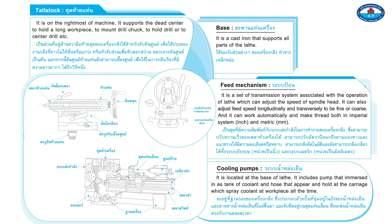Feed mechanism. It is a set of transmission systems associated with the operation of the lathe. It can adjust the speed of the spindle head, adjust feed speed longitudinally and traversely to be fine or coarse, work automatically, and make threads in both imperial (inch) and metric (millimeter) systems.